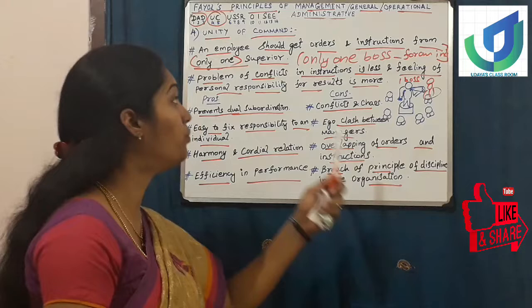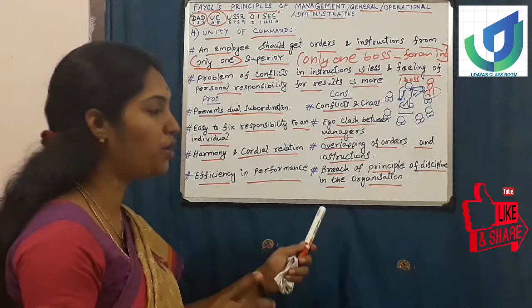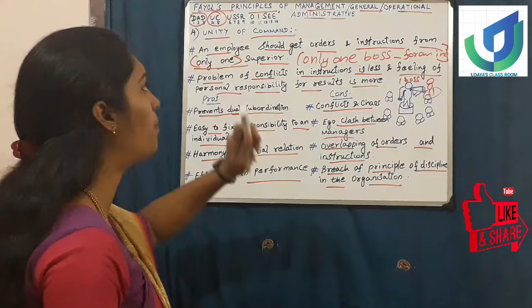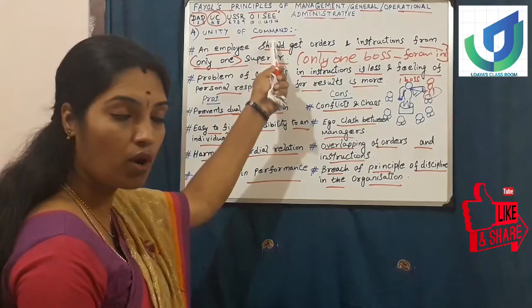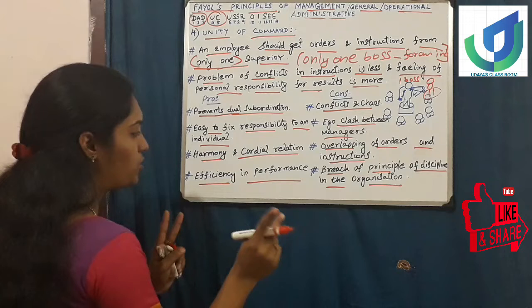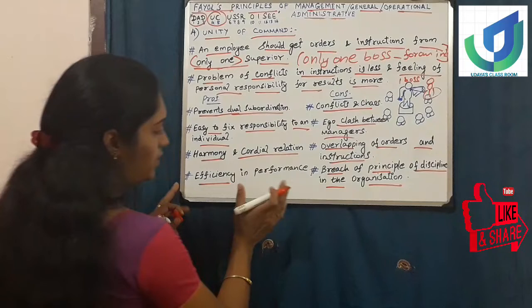The next con is breach of the principle of discipline in the organization. Breach means violating. When we try to violate unity of command - that is, when more than one owner gives instructions - discipline will not be there in the organization. These are all the pros and cons of unity of command. If we follow it, the pros will take place; if we don't follow it, these are the consequences. Let us try two approaches: right approach and wrong approach.